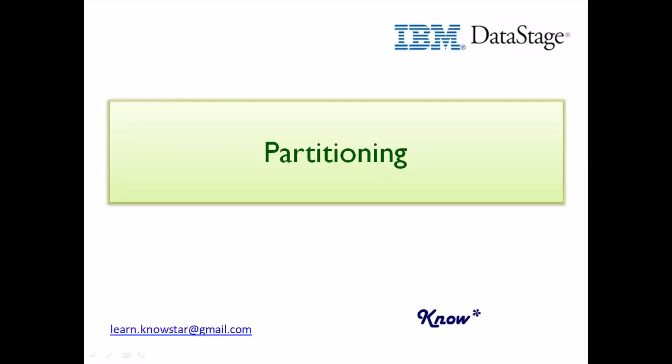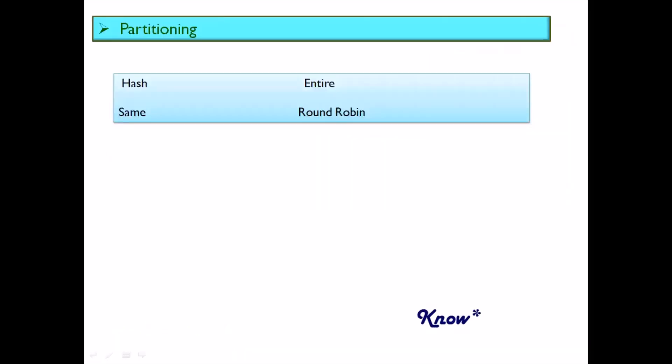The next question you would always be asked as a DataStage developer is about partitioning. This question tests your basic conceptual knowledge of DataStage, as partitioning is a very important feature. You should be aware of the benefits of partitioning, the different kinds, where they are used, their advantages and disadvantages. The main ones to remember are hash partitioning for join stages, entire partitioning for lookup stages, same partitioning to prevent repartitioning, and round-robin for equal distribution of data across partitions.